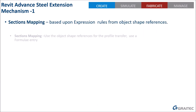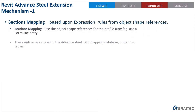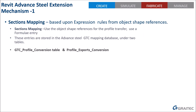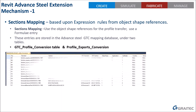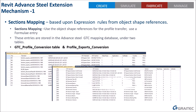The original mechanism was based on an expression rule that tracked the object shape, name, and reference using two tables inside the GTC database: the profile conversion table and the profile export conversions table. Basically it was a formula that condensed an entire group of sections into one line, used to transfer between the two platforms based on commonality between naming conventions.